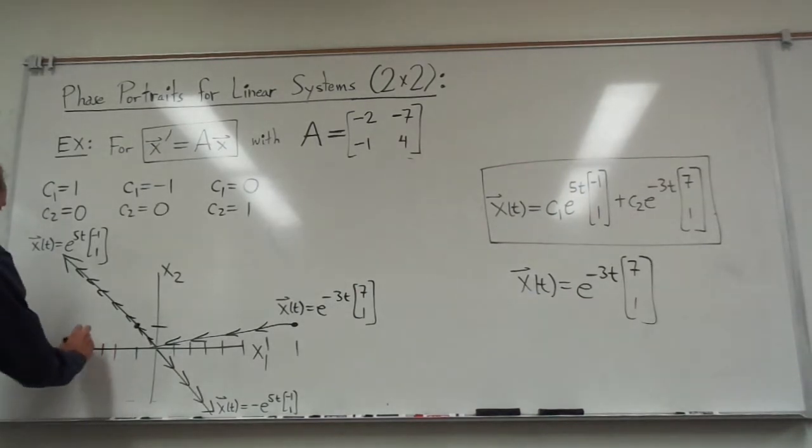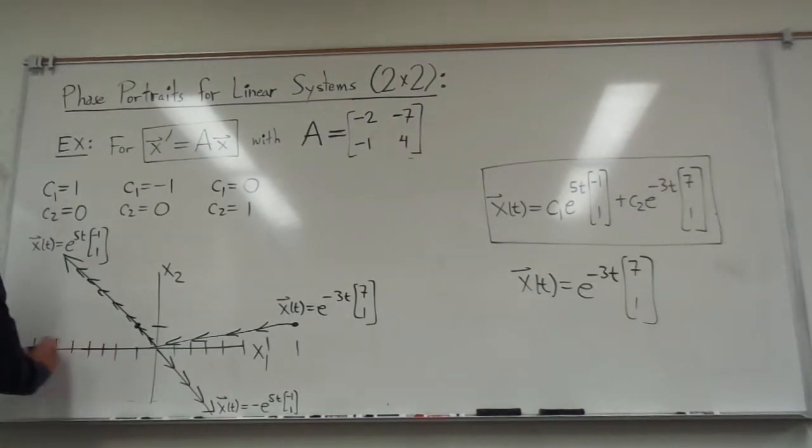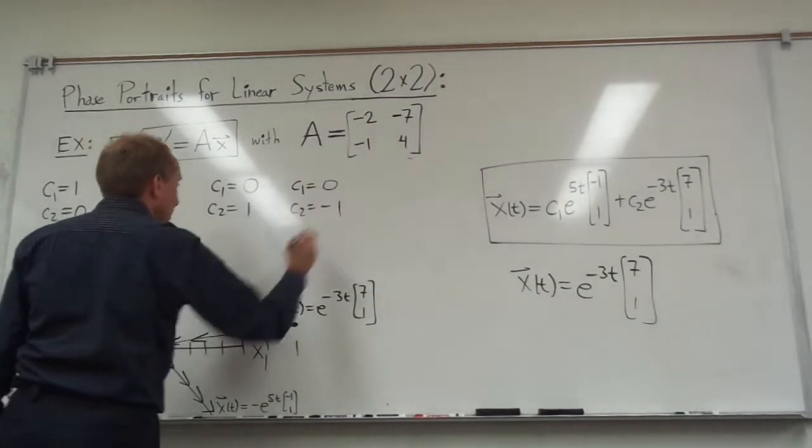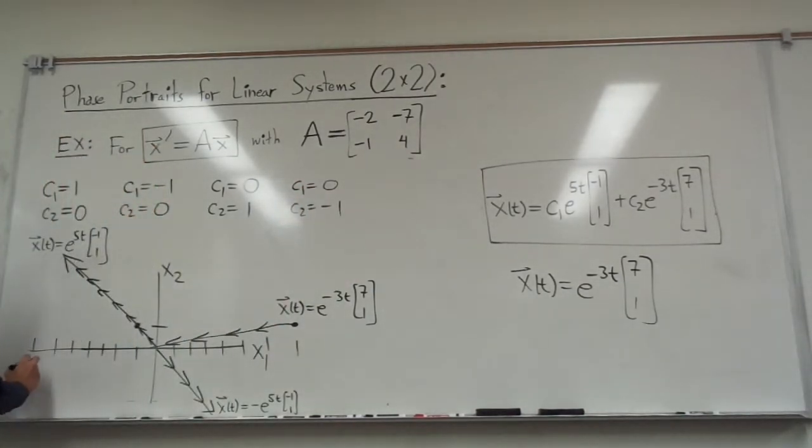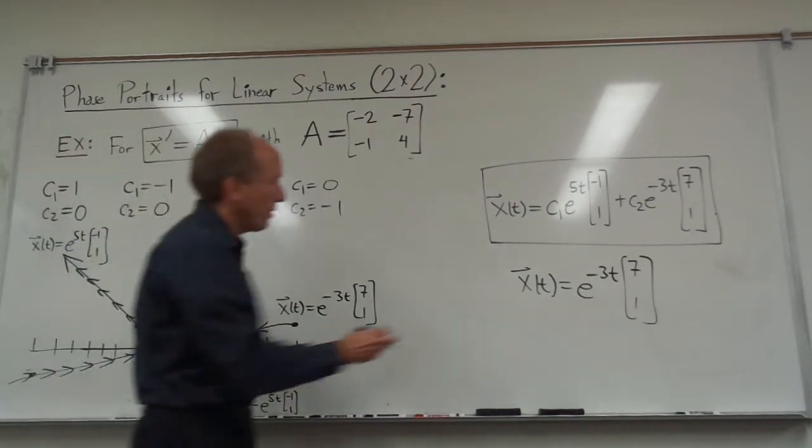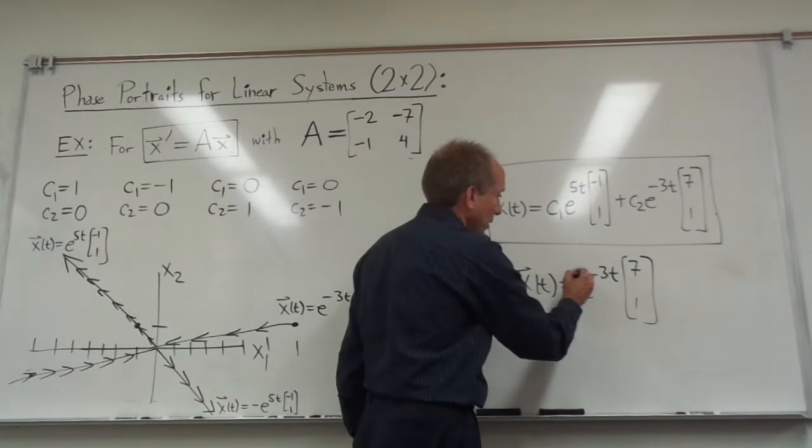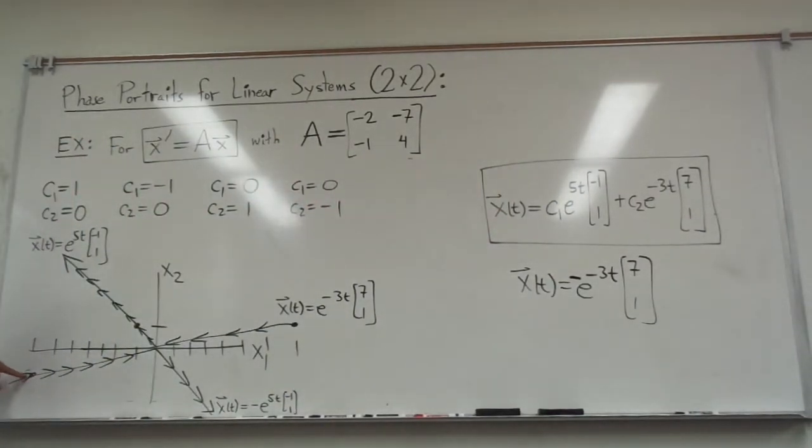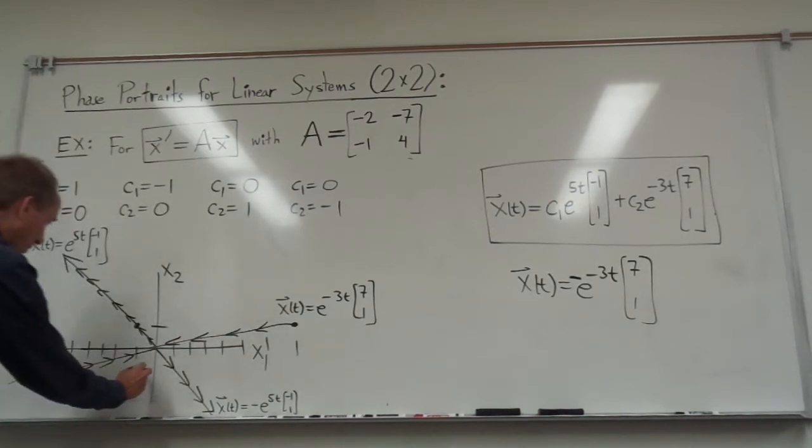And if we go in the opposite direction, well, if we take c1 equal to 0 and c2 equal to negative 1, we're basically going to, again, get the mirror image of the first solution. And this time the arrows are going to go in the opposite direction towards the origin. So in other words, if I put a minus sign in here, then starting at negative 7, negative 1, this particle is going to start approaching towards the origin.